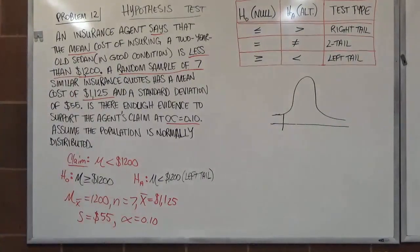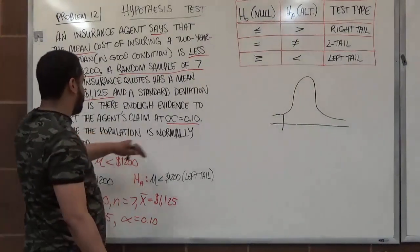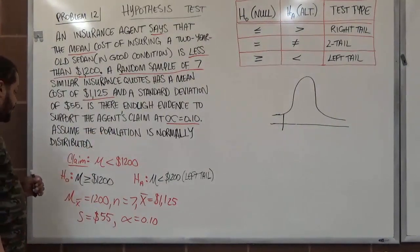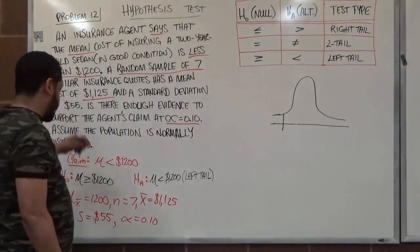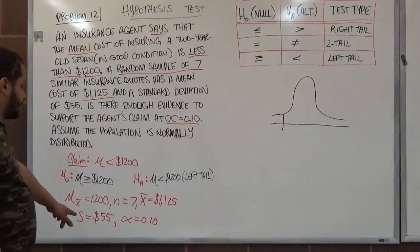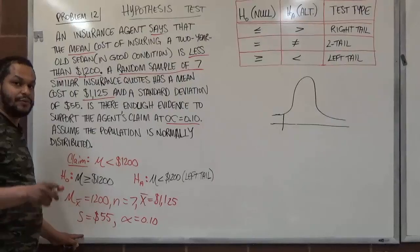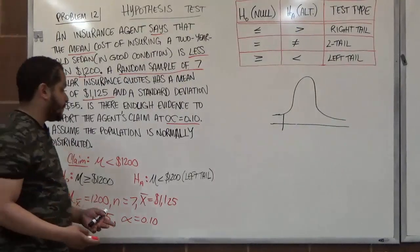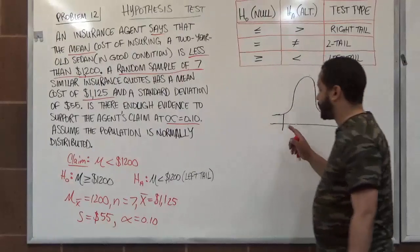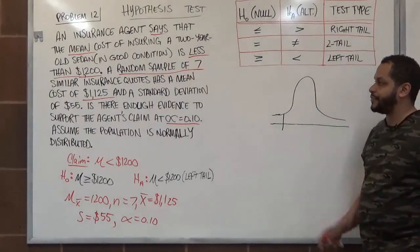Because the population standard deviation is unknown, we use a t-score test. We must build our critical region based on a t-distribution sample.